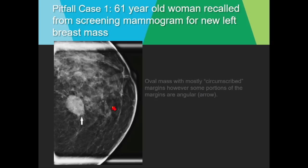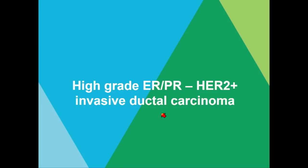The mammographic image shows that some areas of the margin are more angular and indistinct. This is also denser than the normal breast parenchyma. This turned out to be a high-grade ER/PR-negative, HER2-positive invasive ductal carcinoma.